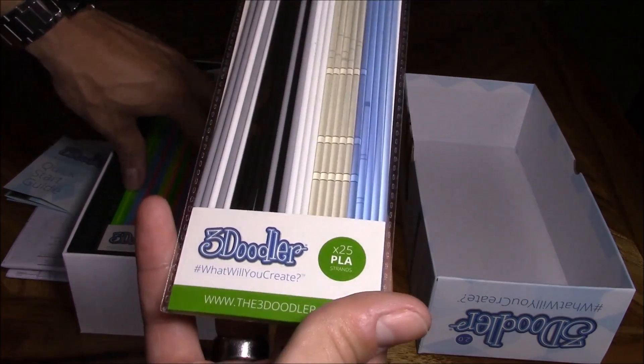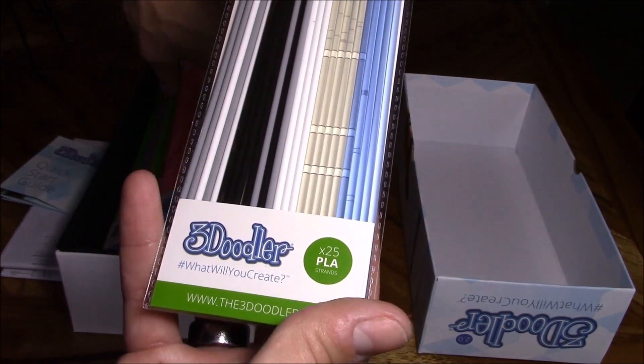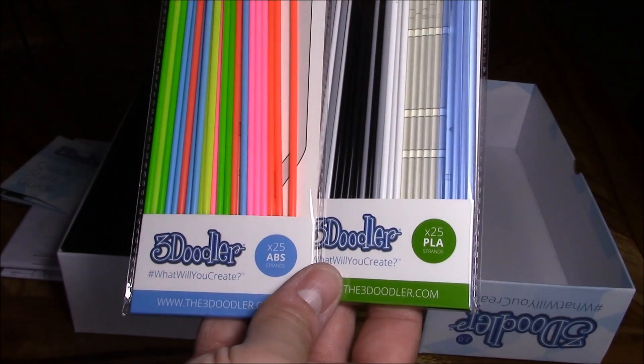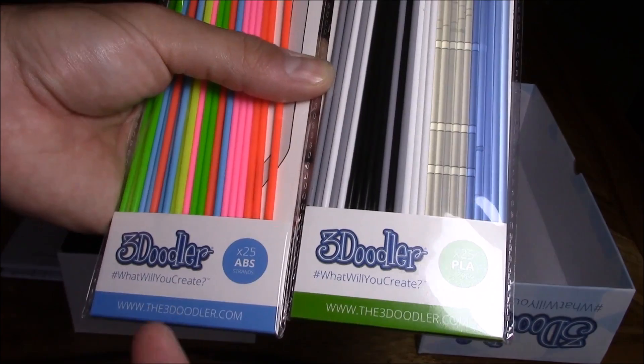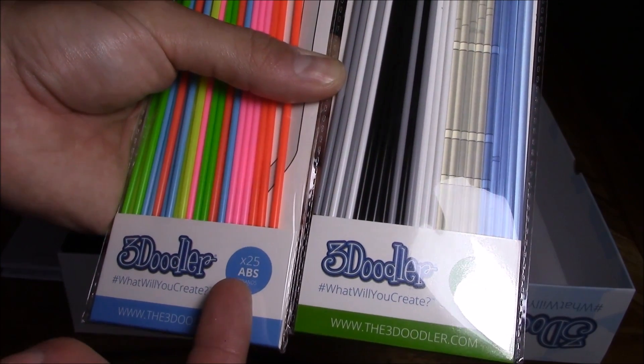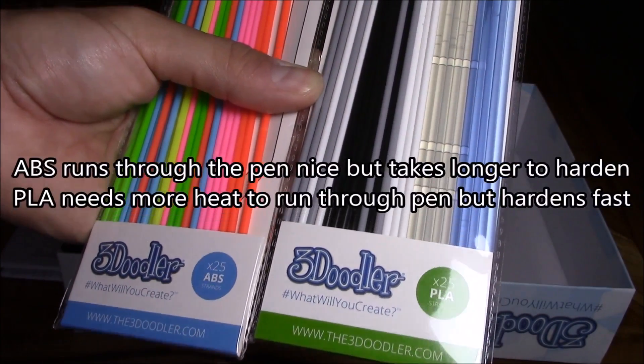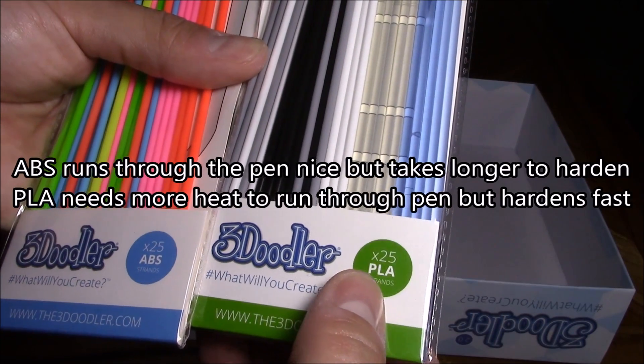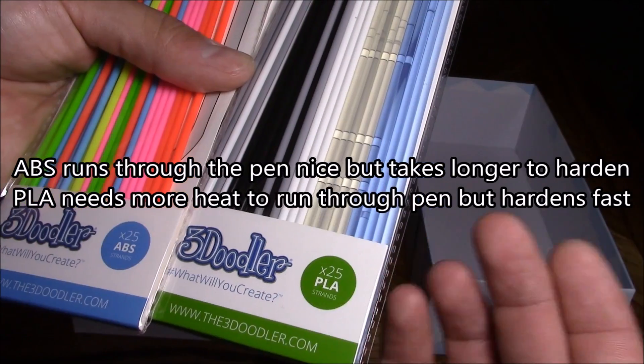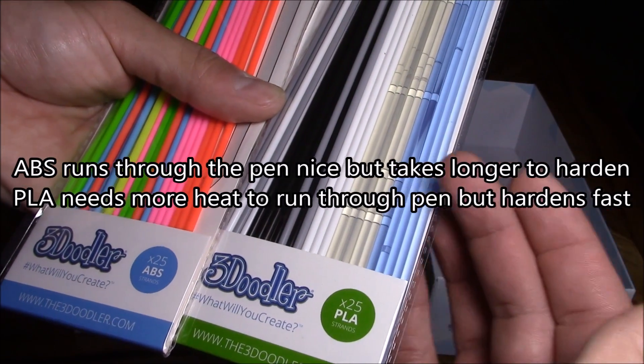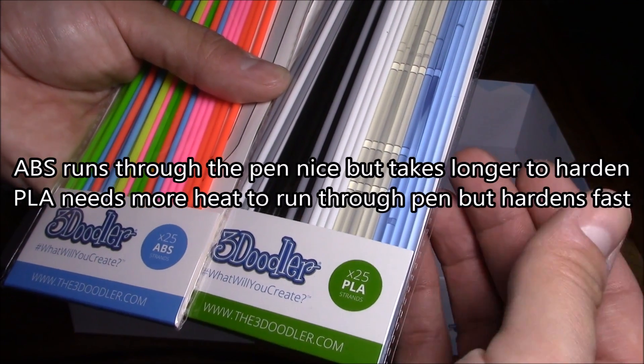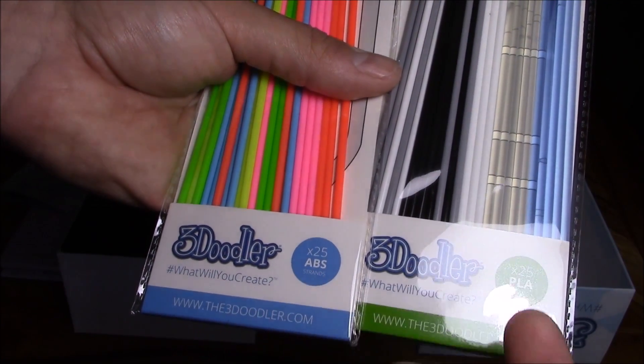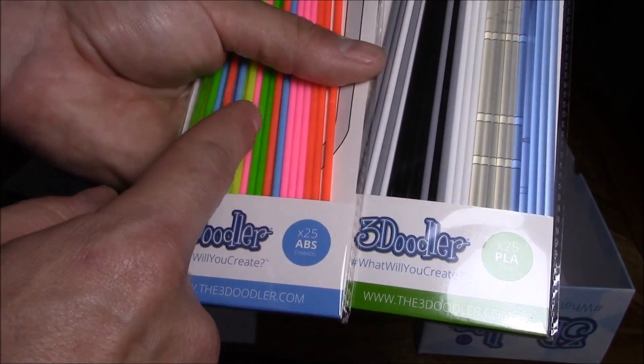The power goes in right here. Now it comes with 25 PLA plastic strands and 25 ABS plastic strands. And there's also a third kind, I think it's called Flex, which is really flexible. Now the ABS goes through the unit real smooth and it tends not to get clogged too often, whereas the PLA tends to get clogged, so you have to increase the temperature. Now after increasing the temperature, I had less clogs. Now the pros for the PLA is that it's easier to mold in my opinion because it stiffens right away, whereas the ABS goes through the pen like butter but it comes out soft, which is harder to mold.